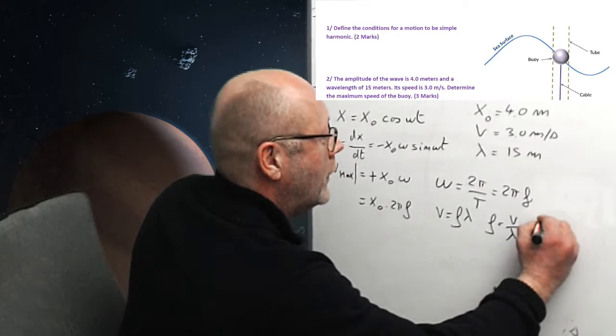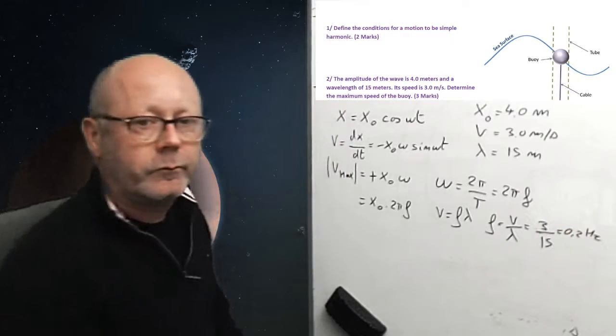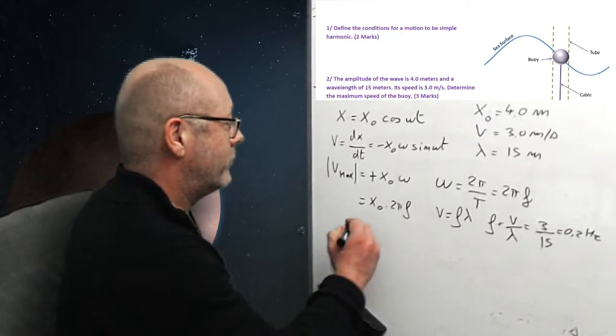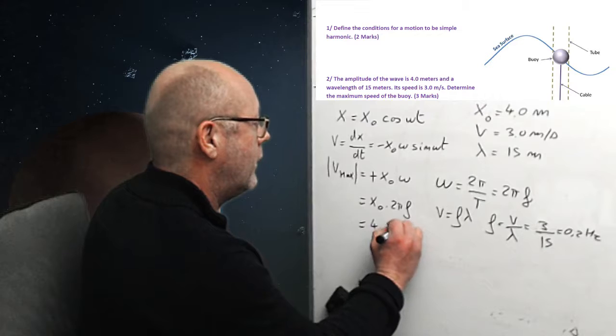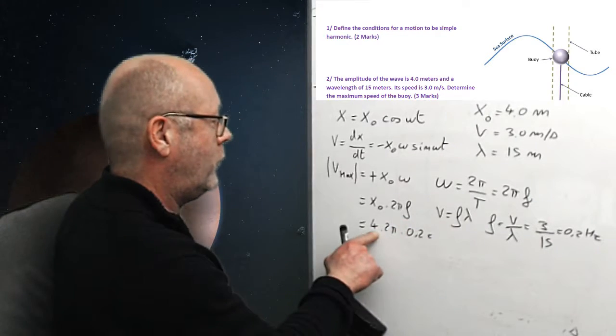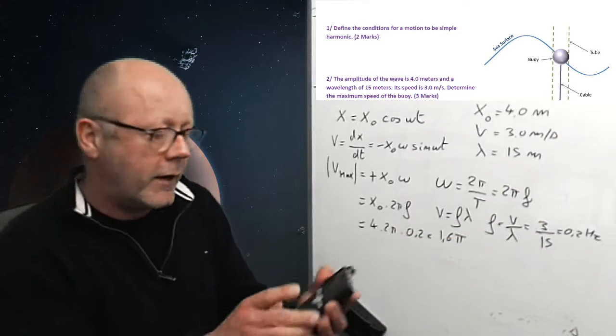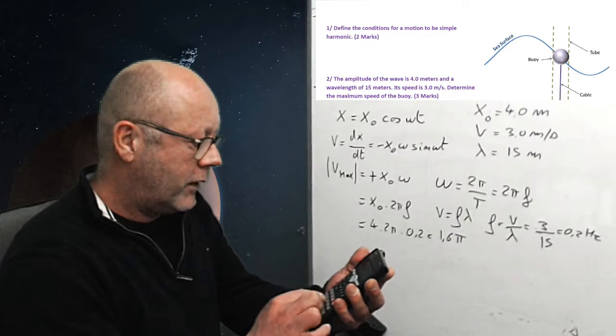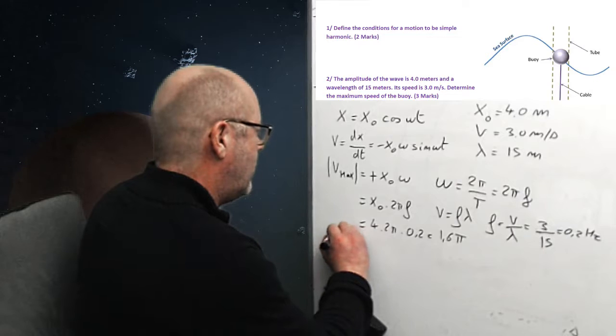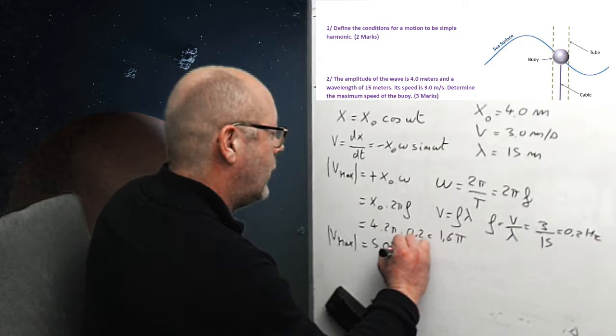Which is... No, v is 3. Excuse me. 3 divided by 15. So, 0.2 hertz. I can plug in the numbers now. I'll get 4 times 2 pi times 0.2. That is 1.6 pi. So, let's quickly calculate this. 1.6 times pi. 5.03.